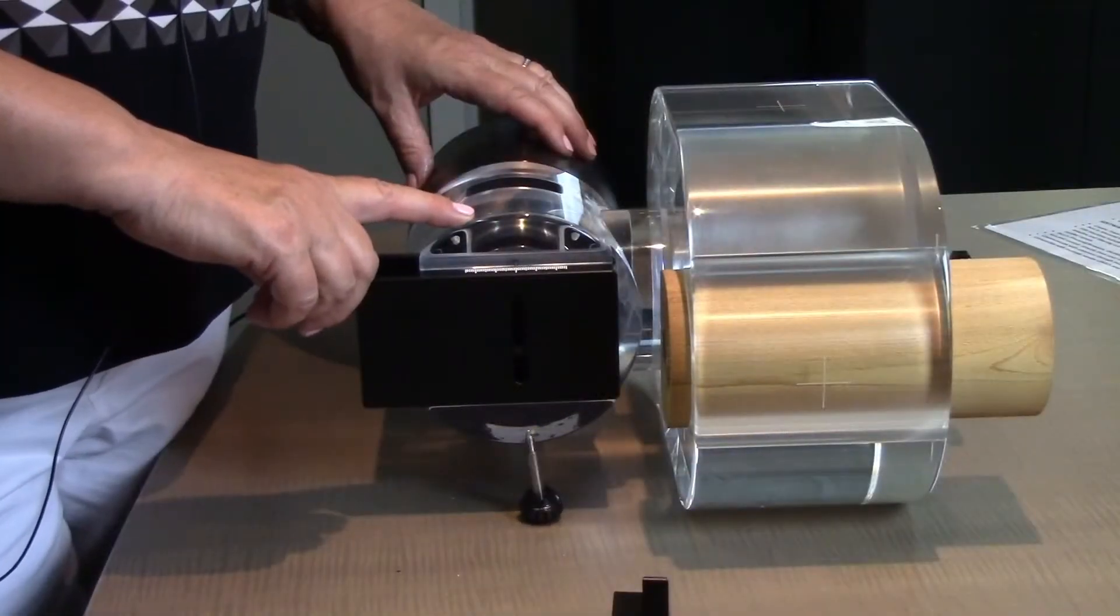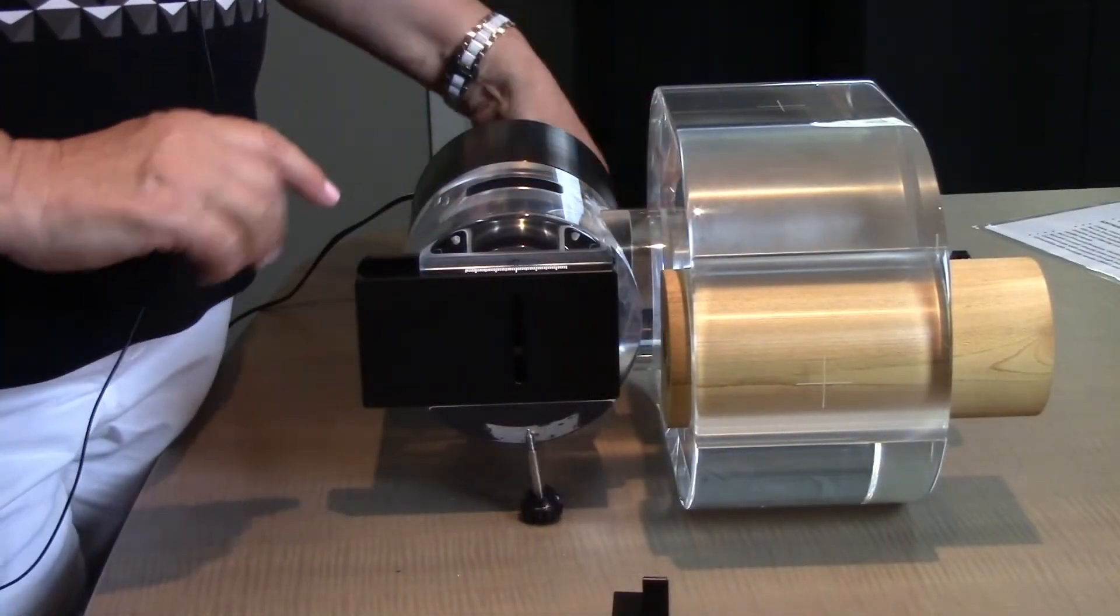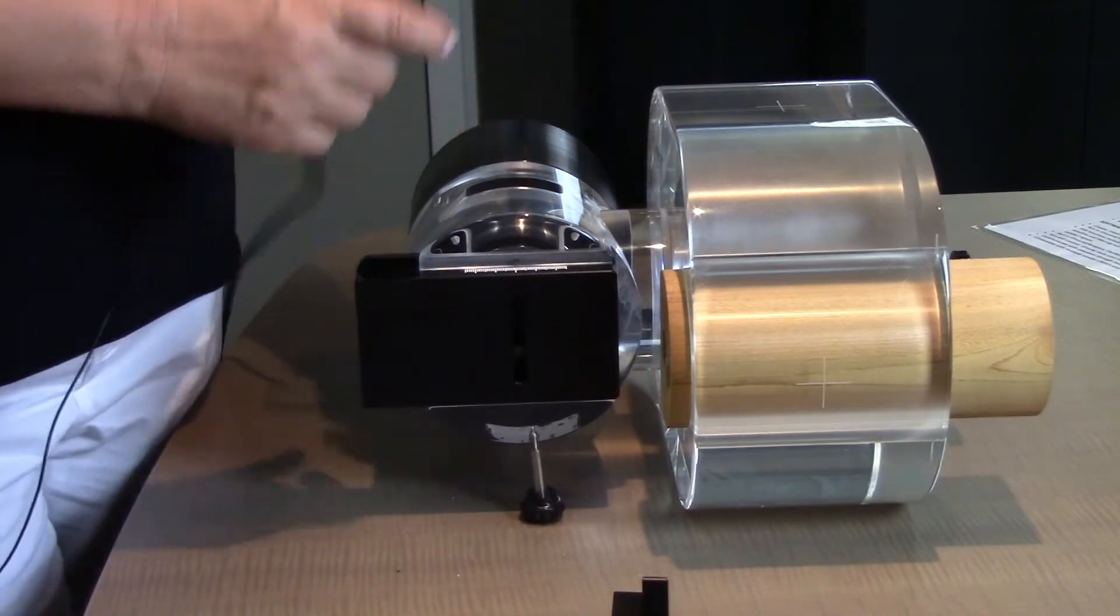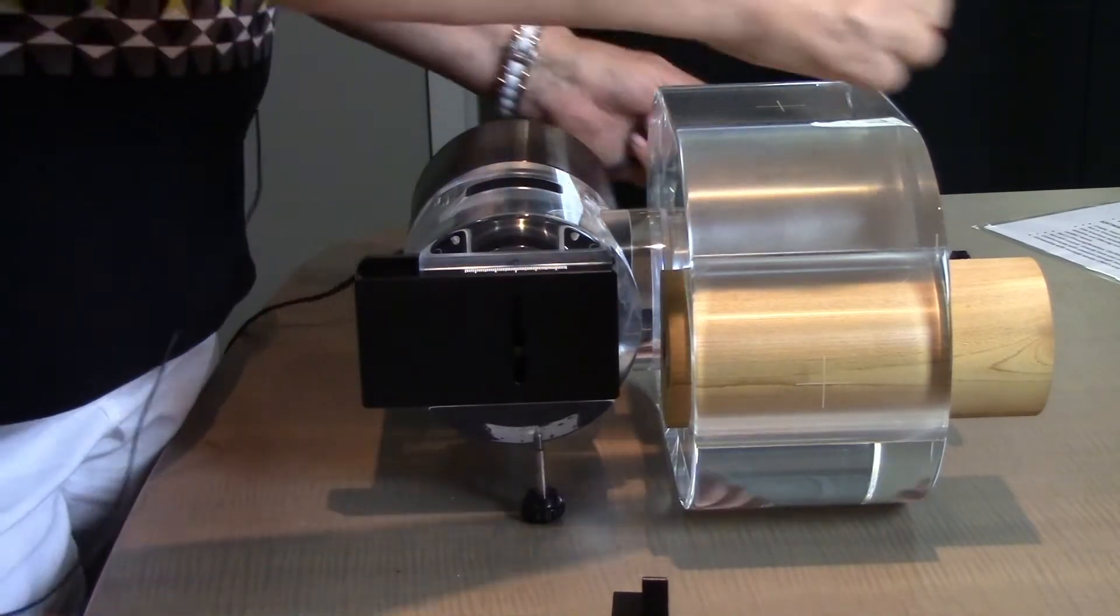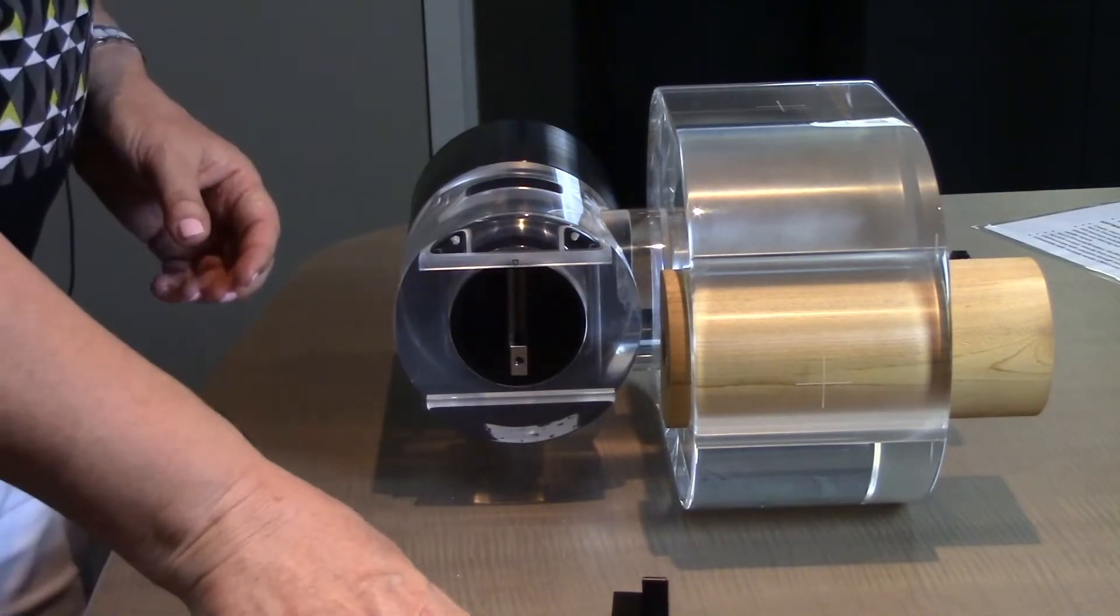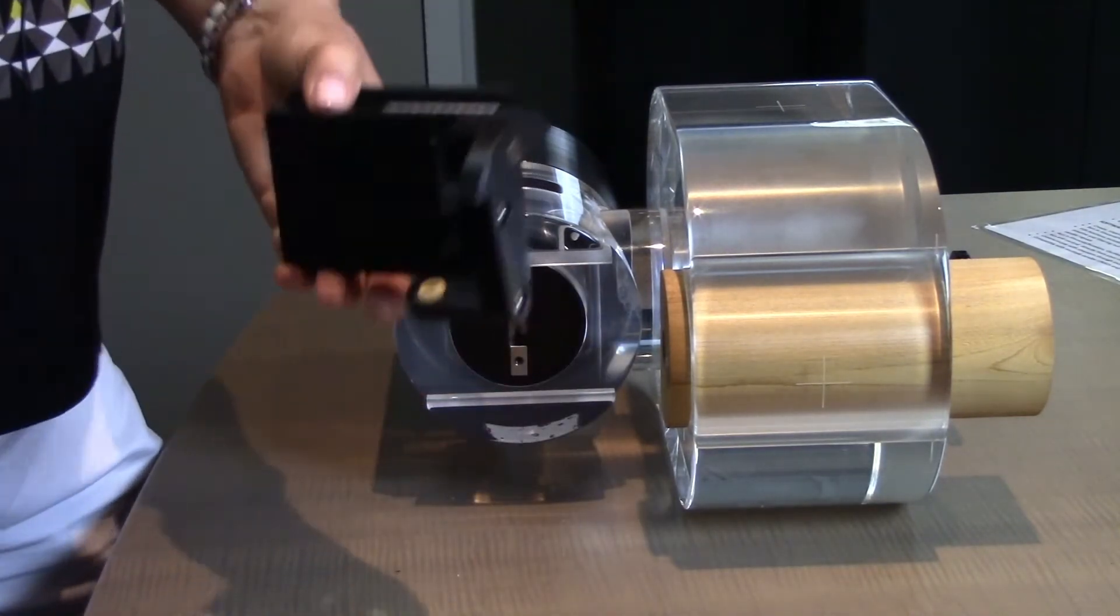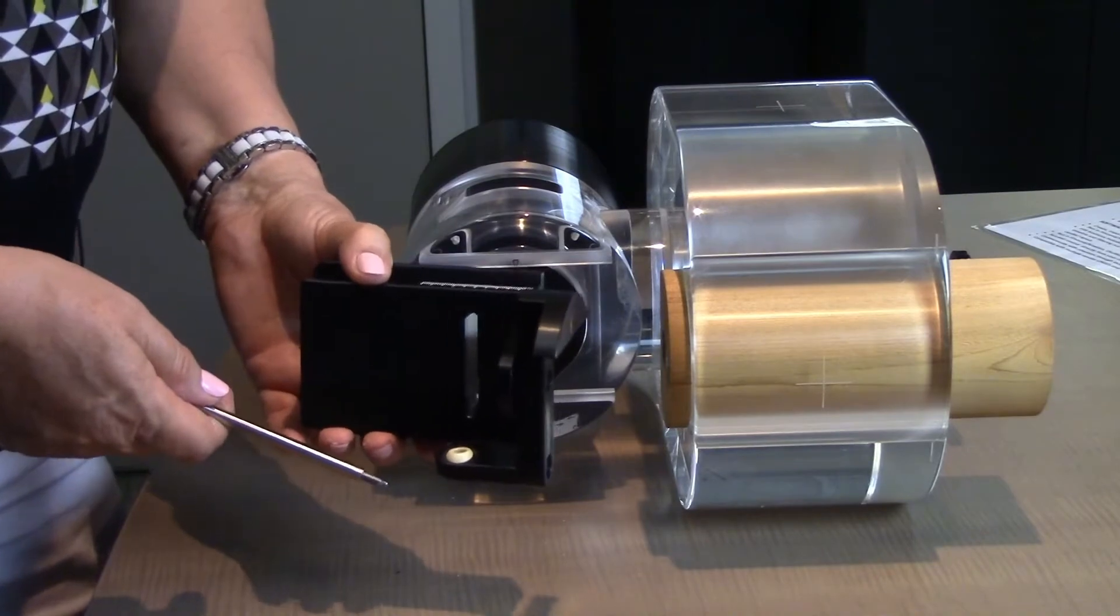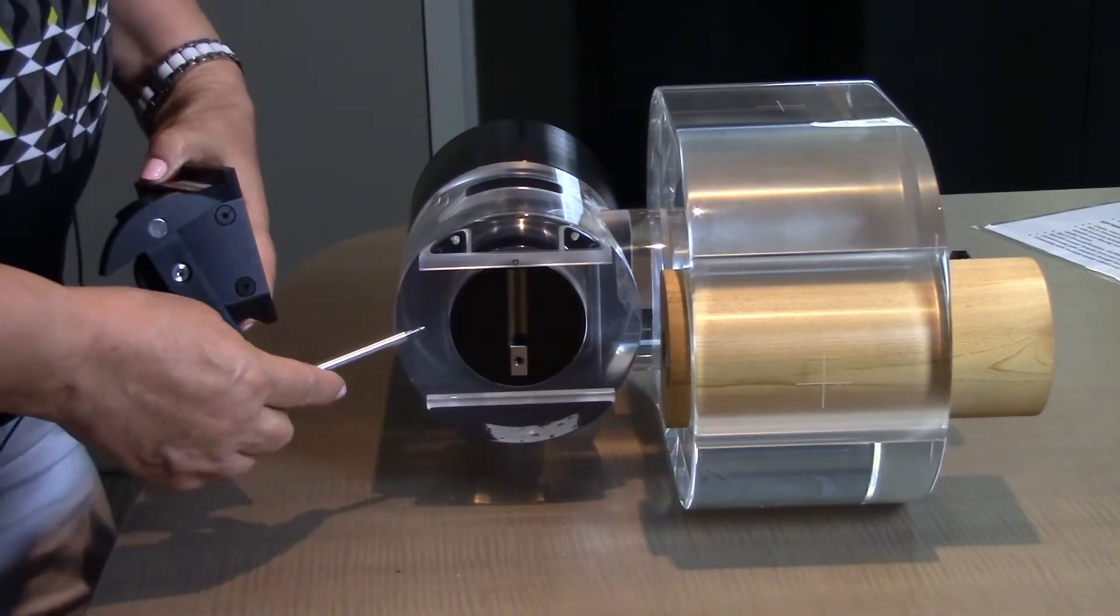Now we're going to look at changing the translation stage. The first thing you need to do is unplug the phantom so that it's no longer attached. Unscrew this and slide it out. Next, take your rotation stage and insert it here.